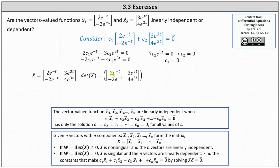The determinant is equal to 2e^(-t) times 4e^(3t), which is equal to 8e^(2t), and then minus 3e^(3t) times negative 2e^(-t), which gives us minus negative 6e^(2t).